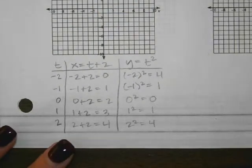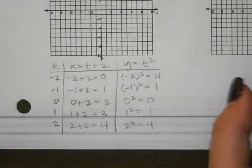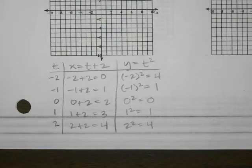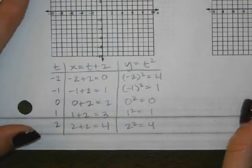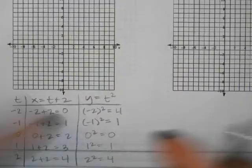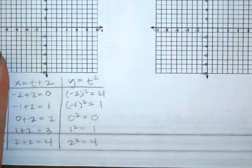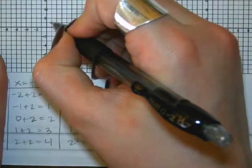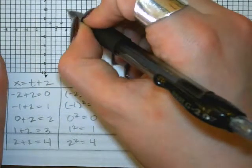I'm going to connect those points — we get a little parabola. I'm not putting arrows on either end because the instructions say the domain is from negative two to two, so this is the entire graph. The instruction to indicate the orientation of the curve means showing which direction the curve was formed — the first point was at (0,4) and it went this way, so I draw arrows to show that direction.